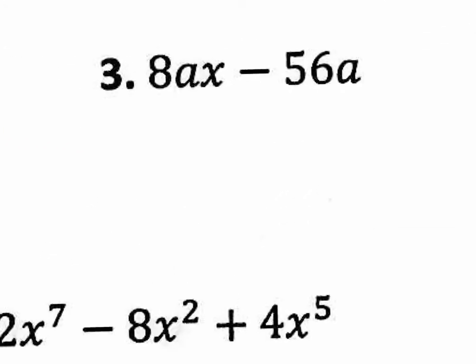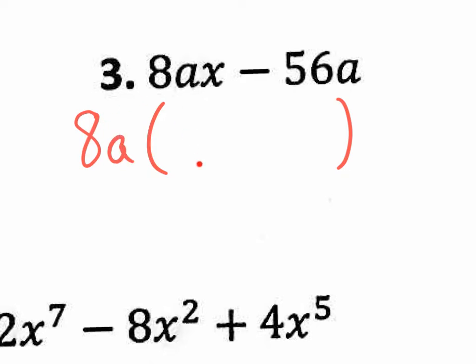Number 3 — two terms, put the parentheses right there. What's in common in both? Looking at 56 and 8: there's a 4, but there's a bigger number — 8. 8 times 7 is 56, 8 times 1 is 8, so we can pull out 8. 4 would have worked, but that wouldn't have been the greatest common factor. There are also A's involved, and the greatest amount of A's we could pull out is one single A from both. So the GCF is 8A. 8A times what gets us 8ax? Just X. And 8A times what gets us negative 56a? Negative 7.